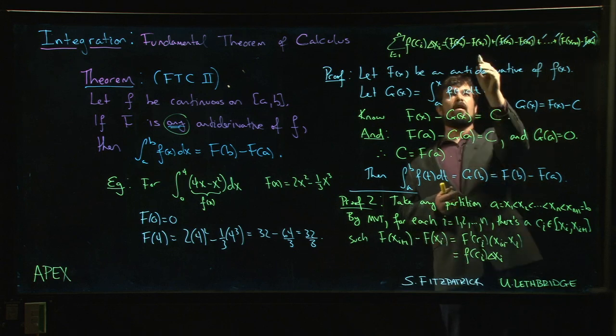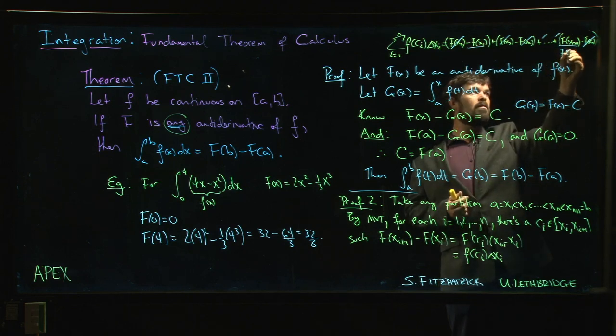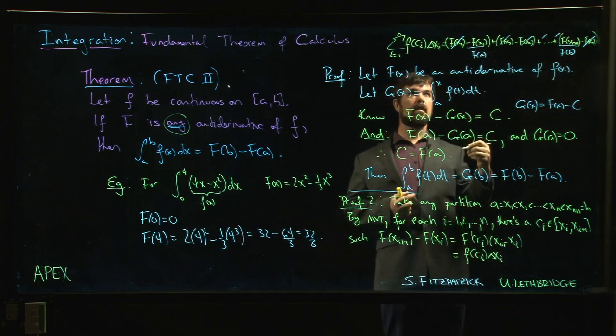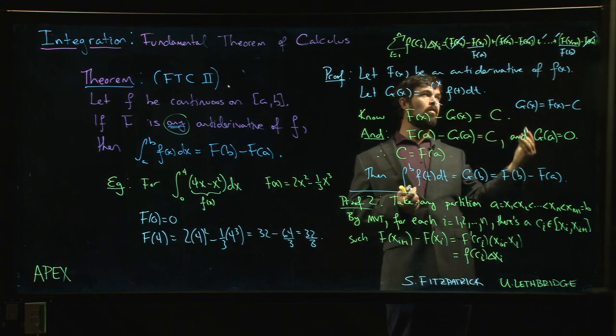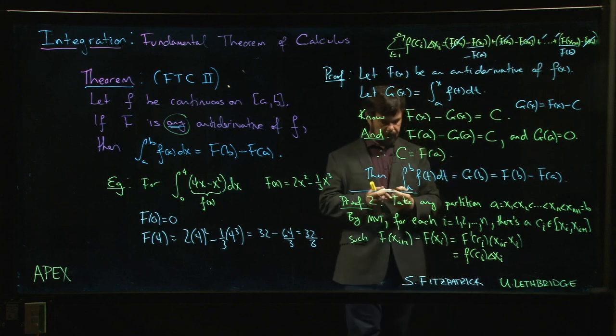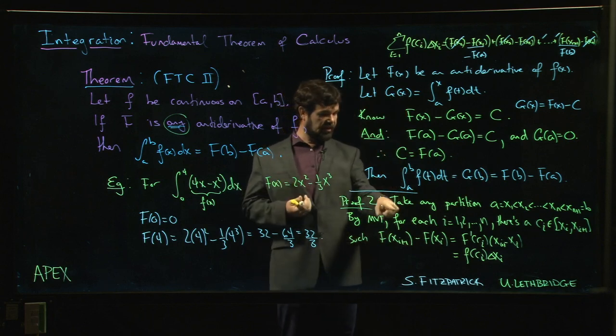The only ones that stick around are here and here. But F(xn+1) is F(b), F(x1) is F(a). And so the Riemann sum is exactly equal to F(b) minus F(a). And so you actually have already this constant value if you choose those ci's carefully in your Riemann sum.